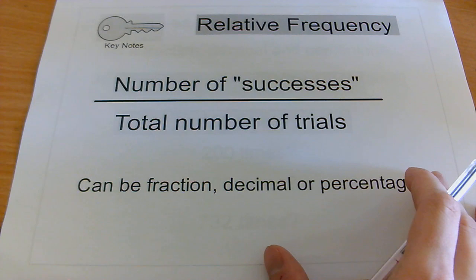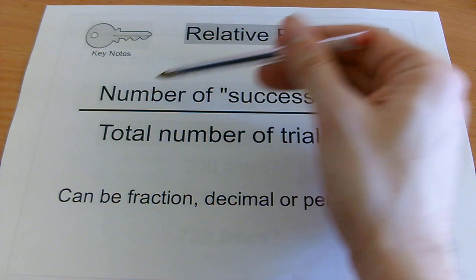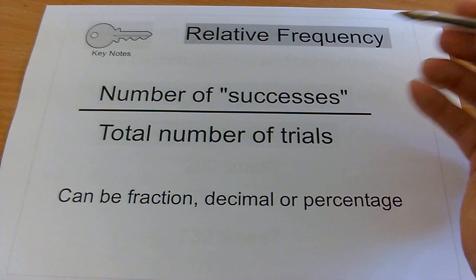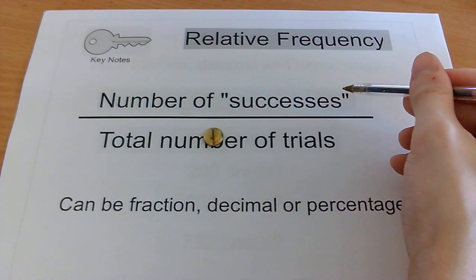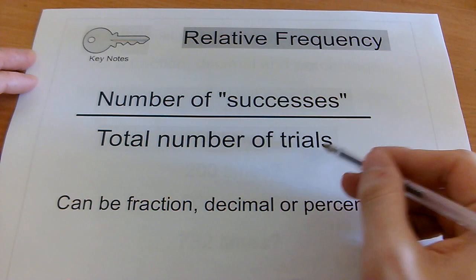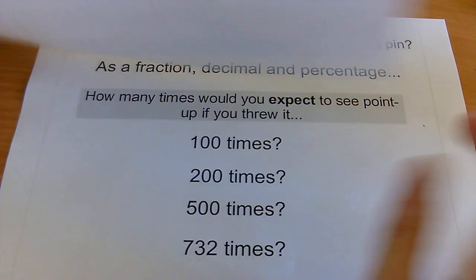So I'm hoping you've made this note here. In general, relative frequency is the number of successes, which doesn't necessarily mean a good thing. It just means a thing that we're looking for. So if we're looking for how many times it lands point up, we will call that a success. Although in this case it's not really a good thing, because you don't want to stand on that. But we're going to call it a success because it's what we're trying to test. And that's out of the total number of trials, which just means experiments. And it can be a fraction, decimal or percentage.